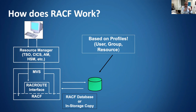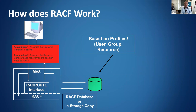The resource manager then has to decide what to do with that answer. This is where it gets interesting — the resource manager could decide to ignore what RACF has said. It could say Mark's not got access, but you could have code in the resource manager that says if it's Mark, give him access irrespective of what RACF says. We should check that the resource manager is calling RACF and also that it is not overriding the decision made by RACF.